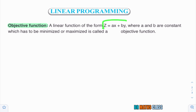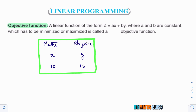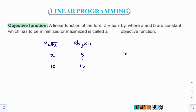What is objective function? A linear equation of the form z = ax + by which is to be maximized or minimized is called objective function. I'll try to explain this with an example. Suppose a shopkeeper has x number of math books and y number of physics books. After selling every math book, he gets a profit of rupees 10. In the same way, he gets a profit of rupees 15 after selling each physics book. Now the question is: what is the profit the shopkeeper will get after selling all these books? That can be calculated with a linear function in two variables — 10x + 15y.